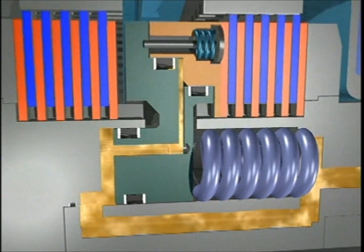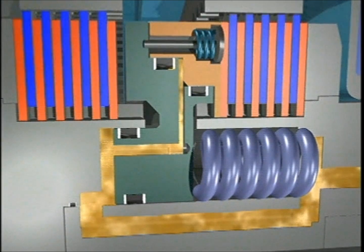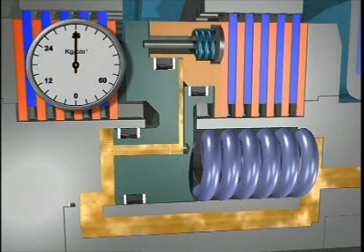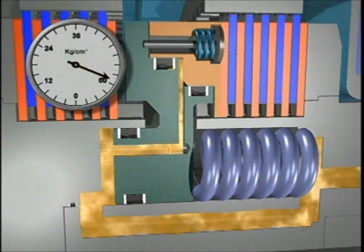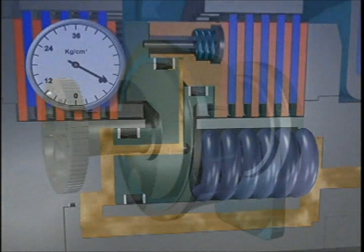Consequently, the clutch engagement can be as smooth as desired. Once the main piston has reached the end of its travel, the pressure increases to 60 bar and the clutch engagement is at maximum torque.